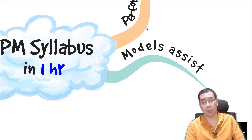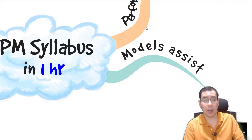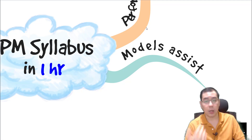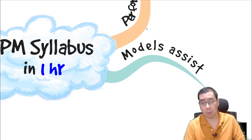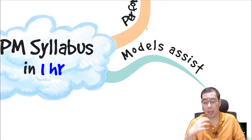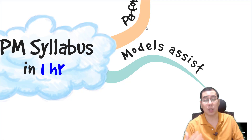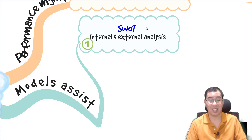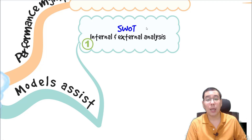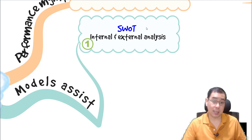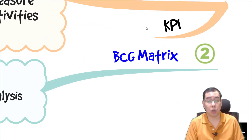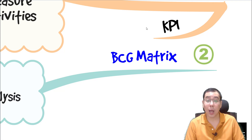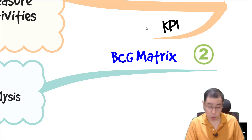Now let's look at different models associated with a company working towards its organization goal. The very first one is SWOT analysis. This is straightforward — it is our internal and external analysis so that management understands the company better: strengths, weaknesses, opportunities, and threats.